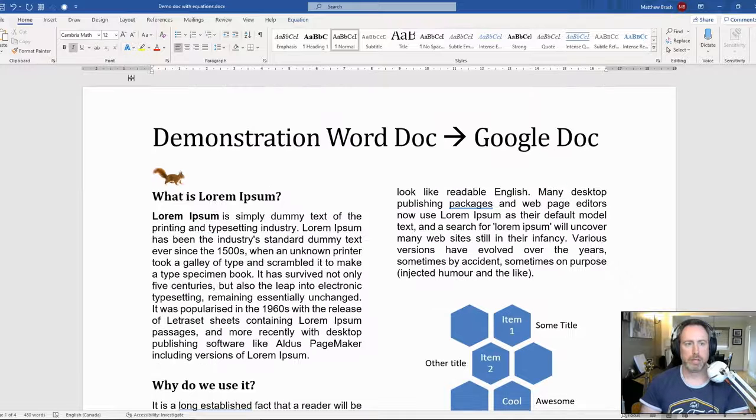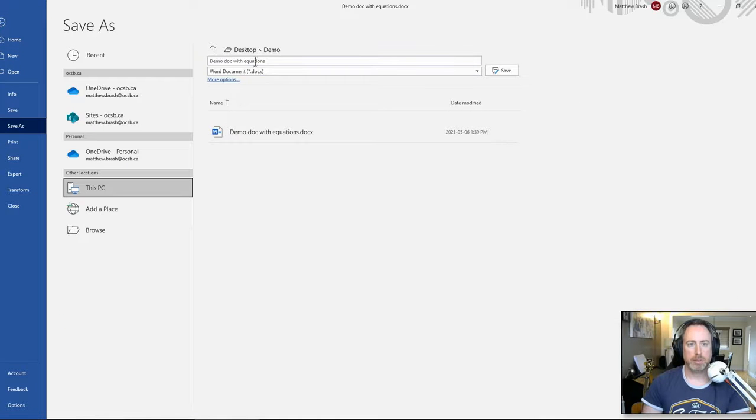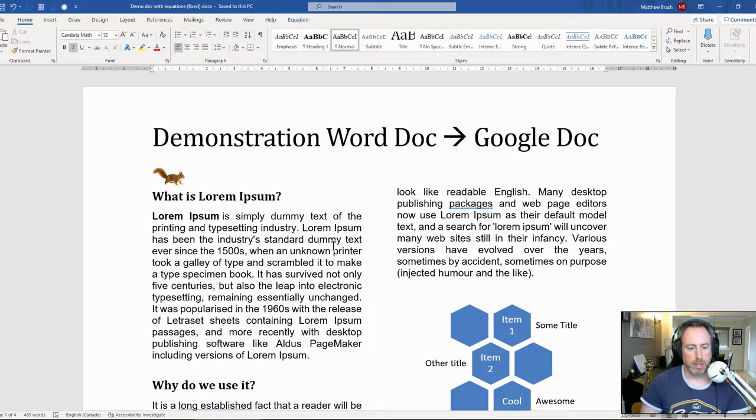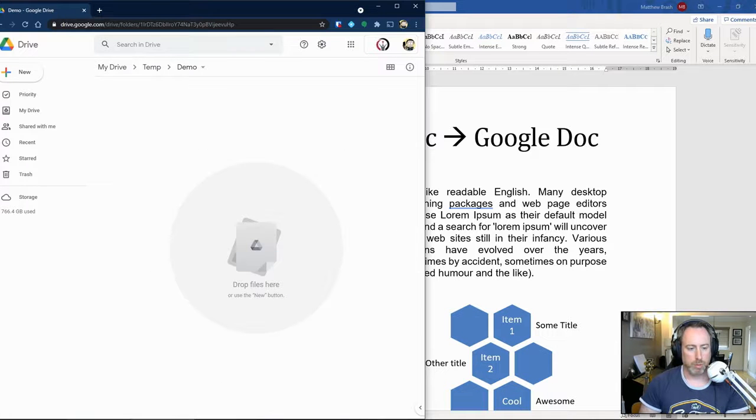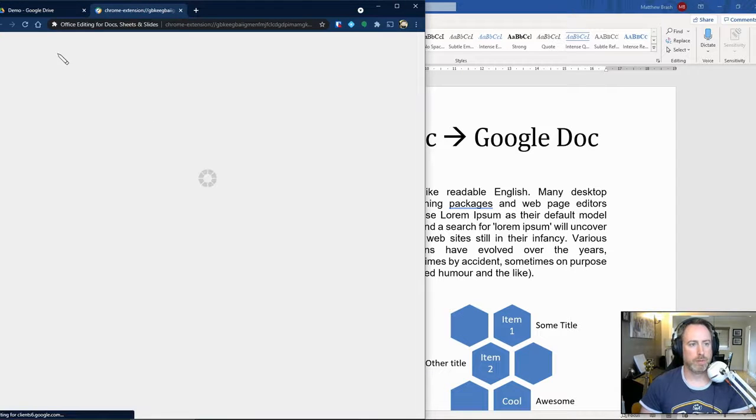That's a usable equation now. And the rest of it was just a table here with not much in it. Okay. Cool. So let's save this now. I will save as. Let's go demo doc with equations fixed. All right. So that's saved. Let's throw that into my Google Drive. So I'll just drag that in. Let's convert that to a Google Doc.